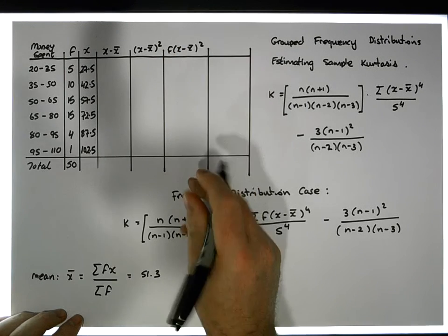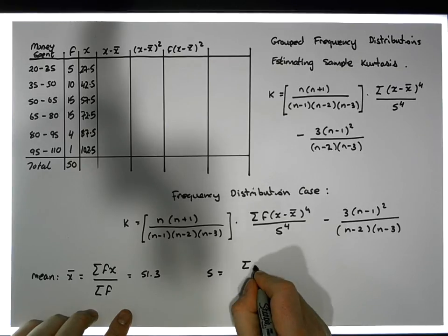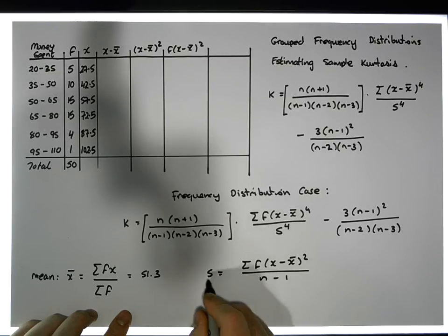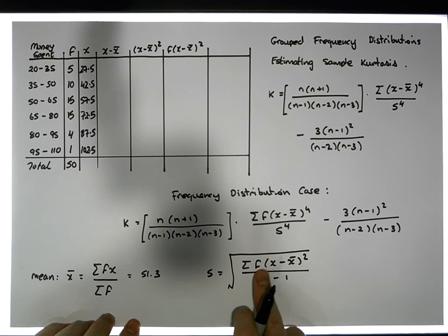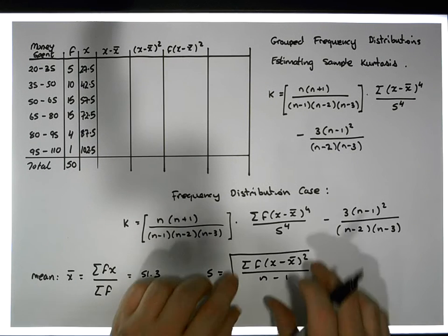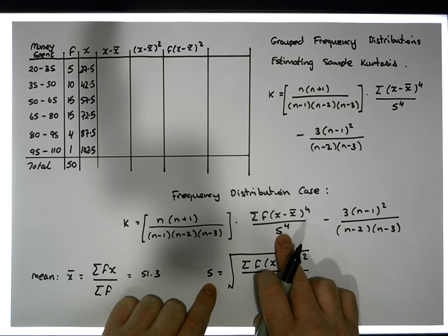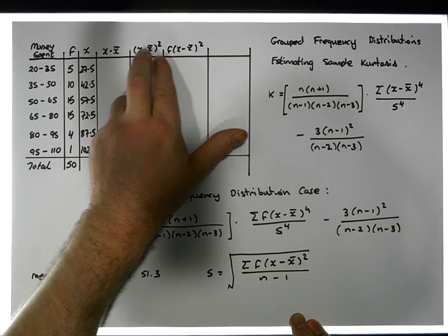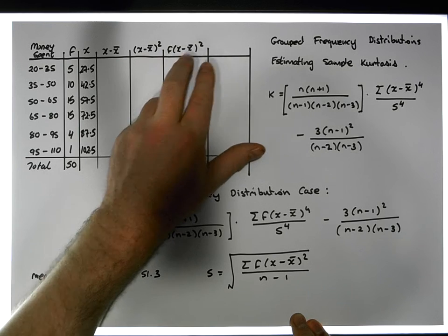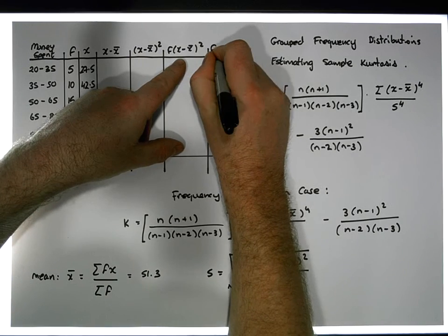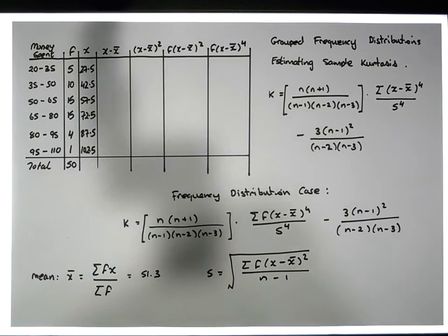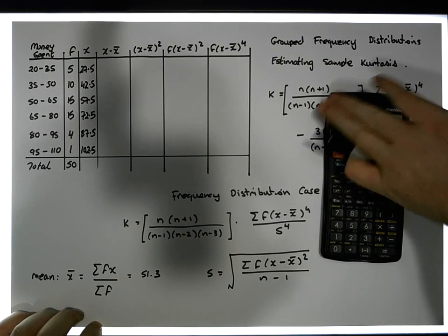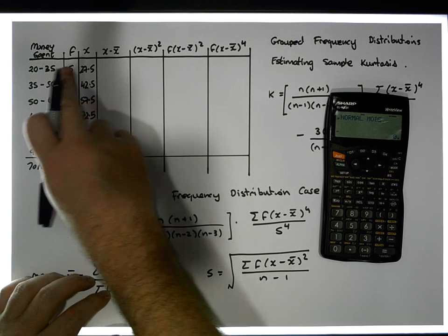I multiply by the frequency to get f times (x minus x-bar) squared, because the sample standard deviation s equals the square root of the sum of f times (x minus x-bar) squared divided by (n−1). Once I have f times (x minus x-bar) squared, I can also multiply this term by (x minus x-bar) squared again to get f times (x minus x-bar) to the fourth power — giving us everything needed for the kurtosis formula.